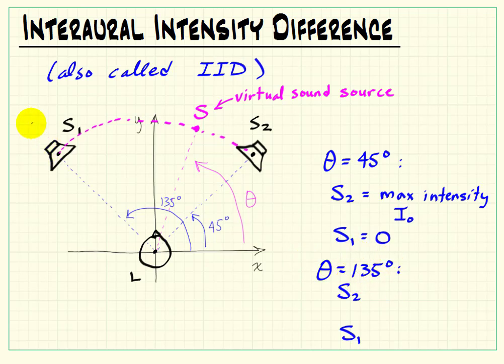Take the other extreme. If we go to the far left at theta is 135 degrees, we should perceive all the sound coming from speaker S1 and none of the sound coming from speaker S2.